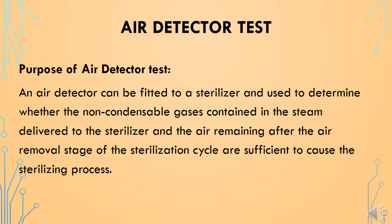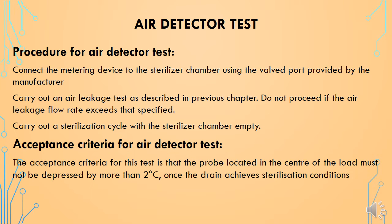The next test is the air detector test. An air detector can be fitted to a sterilizer and used to determine whether the non-condensable gases in the steam delivered to the sterilizer and the air remaining after the air removal stage are sufficient to cause failure of the sterilization process. To perform the test, connect the metering device to the sterilizer chamber using the port provided by the manufacturer. Ensure that the Bowie-Dick test and air leakage test have been passed. This test is carried out with the empty sterilizer chamber running the regular sterilization cycle.